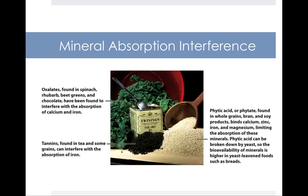Oxalates are compounds found in spinach, rhubarb, beet greens, and chocolate, and they interfere with the absorption of both calcium and iron as well.